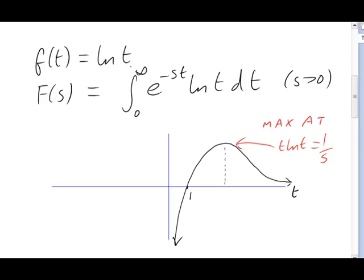First of all, far off to the right because of the tailing exponential heading asymptotically to the t-axis, but also on the left where the log plummets to negative infinity. The exponential, of course, on the left is very close to 1.